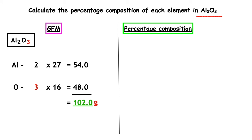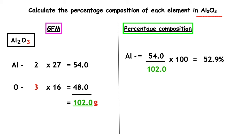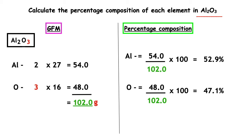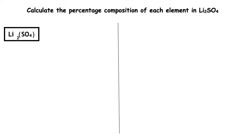To work out the percentage composition: aluminium — the total mass we have is 54 over the GFM of 102, multiplied by 100, and we get 52.9%. Oxygen — we have 48 divided by 102 multiplied by 100, which equals 47.1%. When we add these two percentages up, we get a total of 100%. Example 3 gets a little bit more tricky.